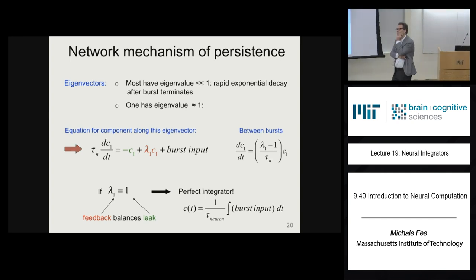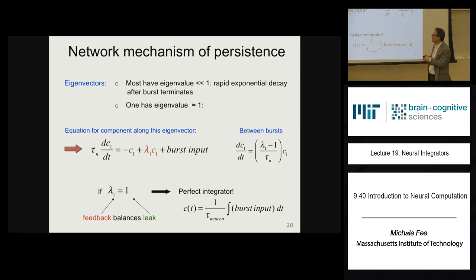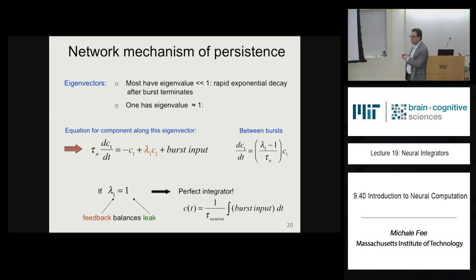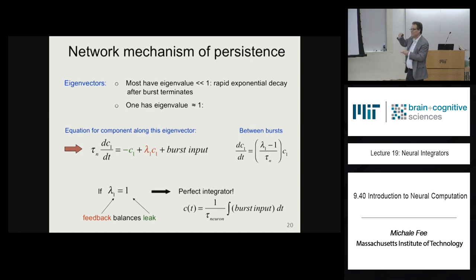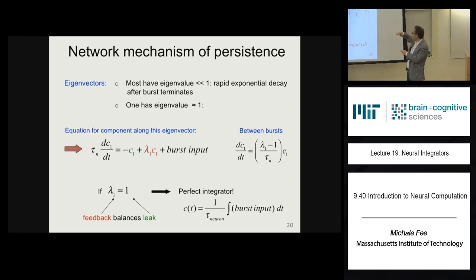If lambda is less than 1, this quantity is negative, so if c is positive, dc/dt is negative and c decays. If lambda is 0.5, then dc/dt = -0.5/tau * c. If lambda is greater than 1, the constant is positive and c continues to grow exponentially. It's only when lambda equals exactly 1 that dc/dt equals zero between burst inputs.